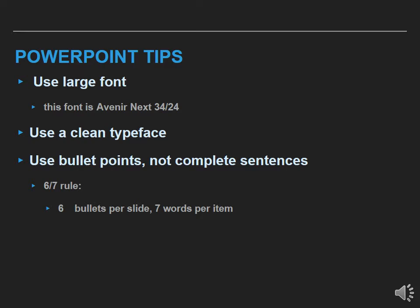There's the six-seven rule: you should have six bullet points per slide and seven words per item. So far in this presentation, I only have three main bullet points, and my third one only has six words in it. You also want to use contrasting colors — it can be hard to see dark blue on light blue or vice versa — so make sure your font pops out and grabs the attention of the audience.